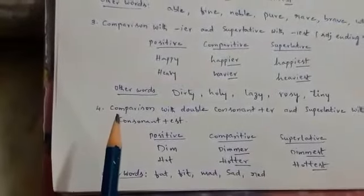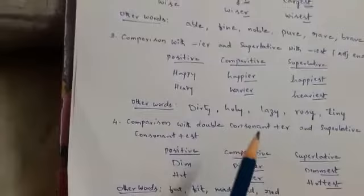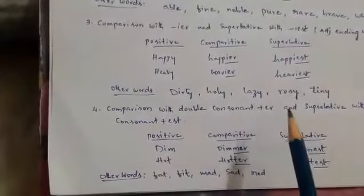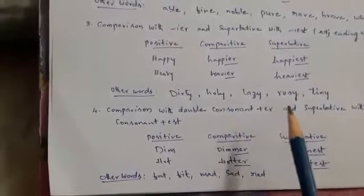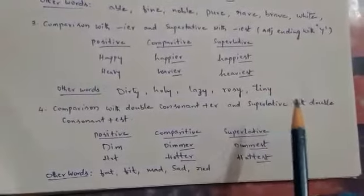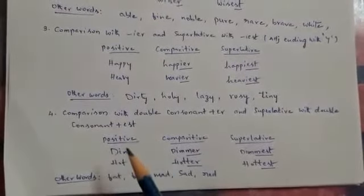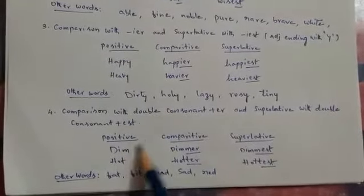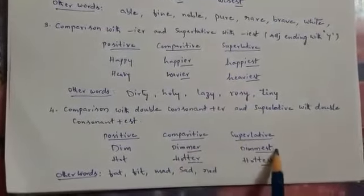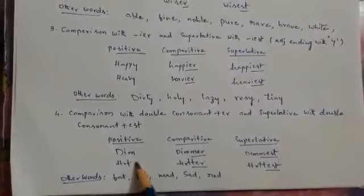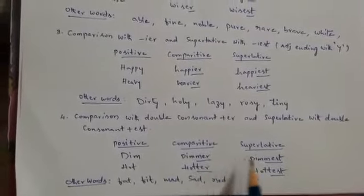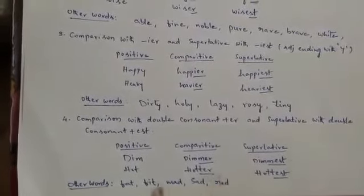Fourth one: comparison with double consonant plus ER and superlative with double consonant plus EST. Dim, dimmer, dimmest. Hot, hotter, hottest. Like that.